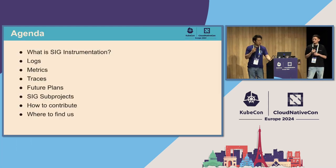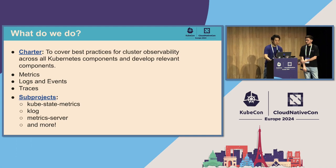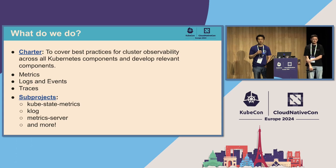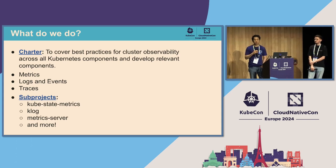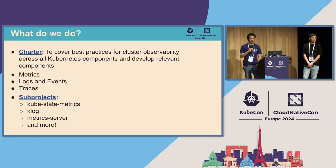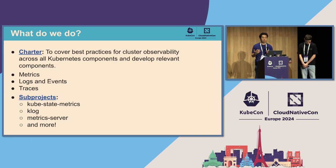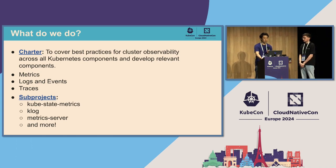So today, this is going to be our agenda. We're going to go over SIG instrumentation, the basic atomics of what we observe in Kubernetes, and also go into SIG subprojects and our future plans. The charter for SIG instrumentation is basically to cover the best practices for observability in Kubernetes. We steward various SIGs and the way that they instrument their components — Kube API server, Kube scheduler, the Kubelet, Kube proxy — generally with metrics, logs, traces, and events. We have subprojects like Kube-state-metrics, and Metrics server which allows you to horizontally and vertically scale your Kubernetes cluster.